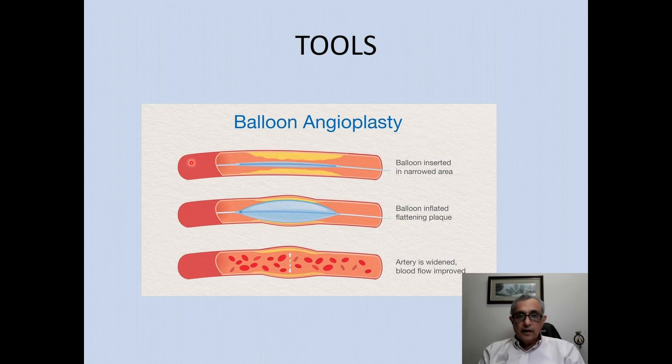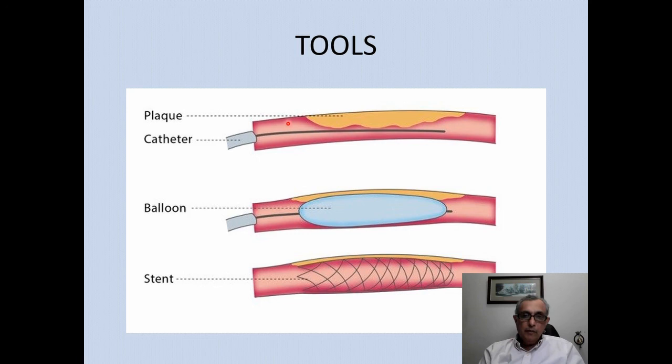Balloons and angioplasty: if a vessel is narrowed, a balloon is placed across it and inflated to recanalize areas of stenosis within blood vessels, bile ducts, ureters, and other structures. However, if plaques or stenosis are eccentric, a balloon alone will not keep the lumen open, and metallic stents must be deployed.